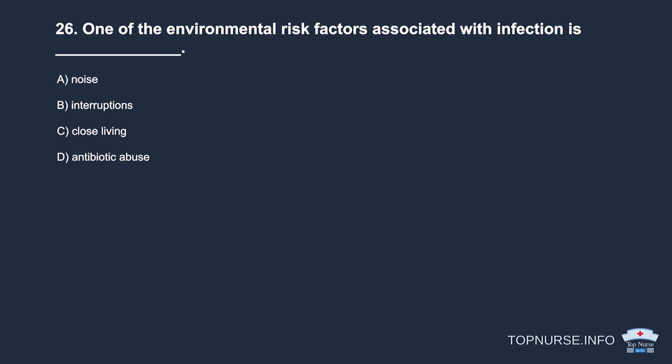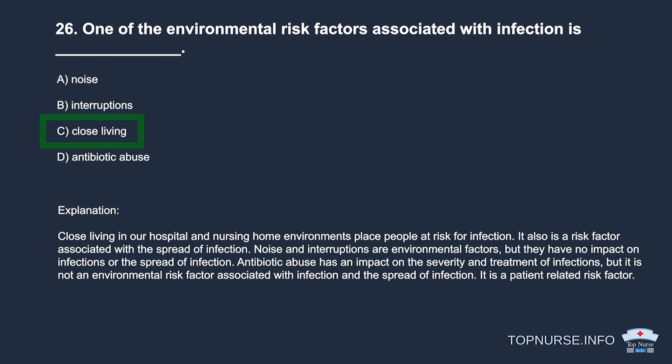Question 26: One environmental risk factor associated with infection is: a. Noise. b. Interruptions. c. Close living. d. Antibiotic abuse. Correct answer: c. Close living. Close living in hospital and nursing home environments places people at risk for infection. Antibiotic abuse impacts severity and treatment of infections but is a patient-related, not environmental, risk factor.